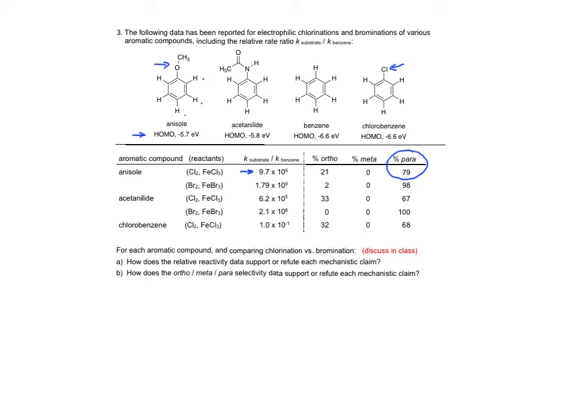My suggestion is to write out the intermediate leading to the major isomer using mechanistic claim 1 and mechanistic claim 2. I show this for anazole chlorination as an example.